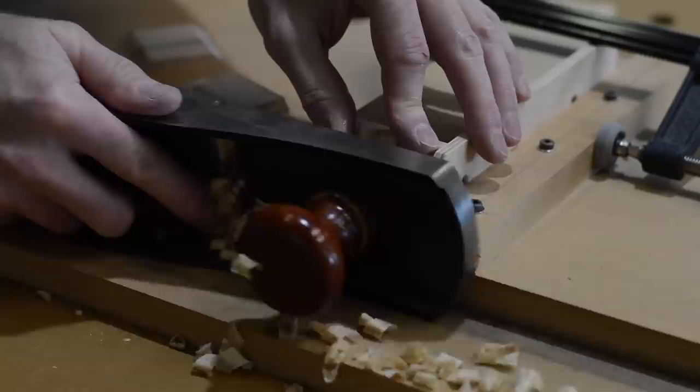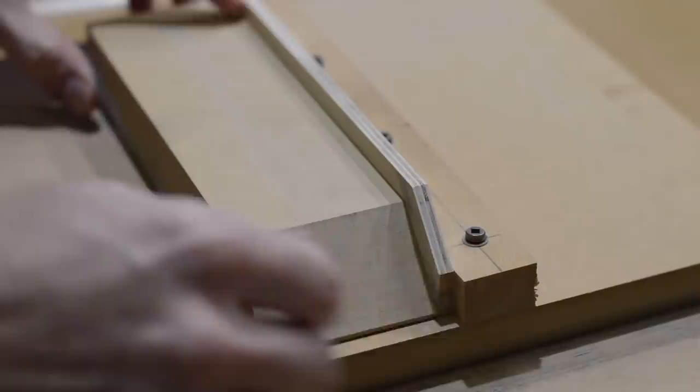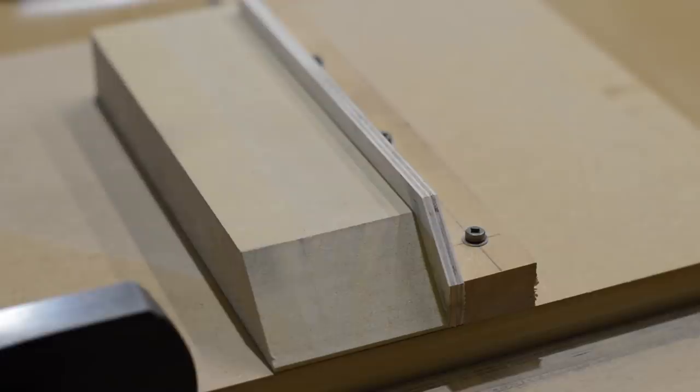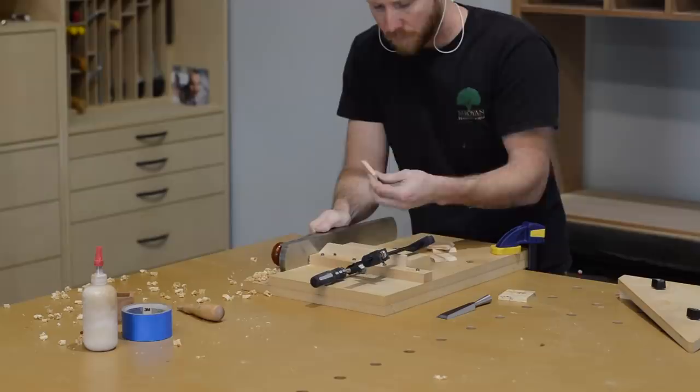I thought it would be easiest to use a shooting board to cut the miters on these box parts. So I decided to attach a small piece of MDF to my shooting board. I used some blue painter's tape to shim it to make sure that it's cutting a perfect 45 degrees. One of the main benefits of using a plane to make this cut is you're not going to have any tear out or blowout, which could potentially happen if you're using a table saw set at 45 degrees.